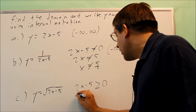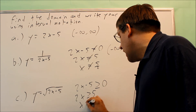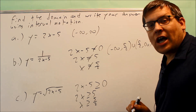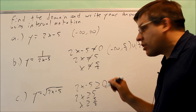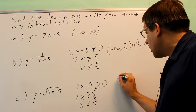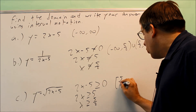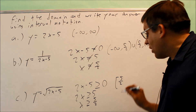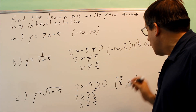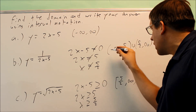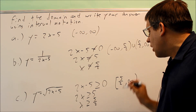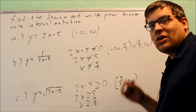Adding 5 to both sides and dividing by 2, we get x is greater than or equal to 5/2. In interval notation, because there's an equal sign, we include a bracket at 5/2, going to positive infinity. Infinity always has a parenthesis, so the answer is [5/2, infinity).